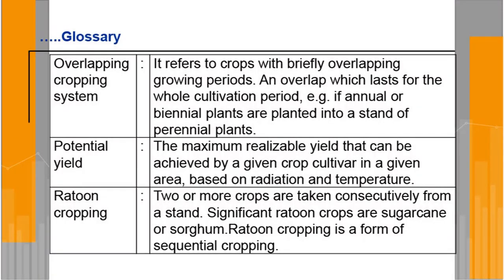Potential yield: the maximum realizable yield that can be achieved by a given crop cultivar in a given area, based on radiation and temperature. When growth factors are not limited — whether biotic or abiotic — and the plant is getting the best environment, the yield obtained under those conditions is the potential yield, the maximum possible yield.